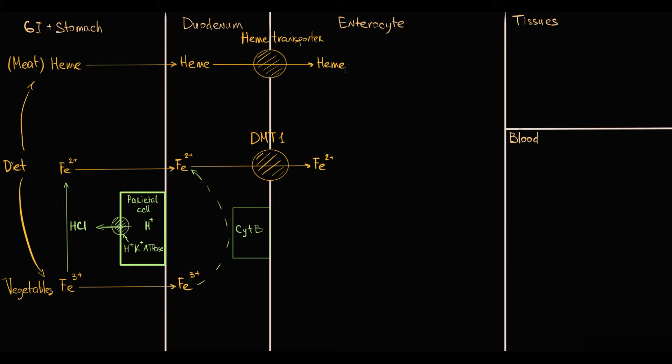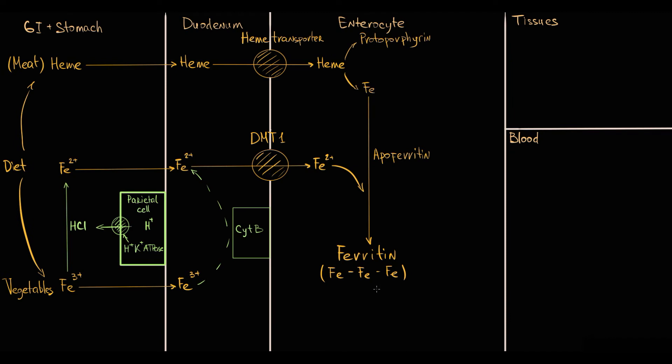Inside the enterocyte, heme is degraded into protoporphyrin and iron. And all iron molecules inside the enterocyte bind to a specific protein called apoferritin with formation of ferritin. Ferritin is basically deposition of iron molecules where iron is stored until our organism will require additional iron. So in form of ferritin, also called mucosal ferritin, iron is stored in the enterocyte.